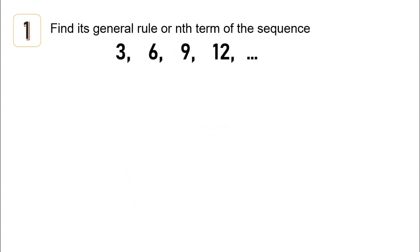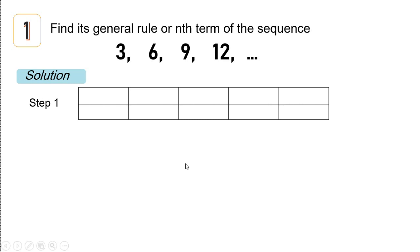Number one: find the general rule or nth term of the sequence 3, 6, 9, and 12. Step one: let's draw a table and put in the value of n, the term number, and a-sub-n. Term number one, a-sub-1, is 3. Term number two, a-sub-2, is 6. Term number three is 9, and term number four is 12.